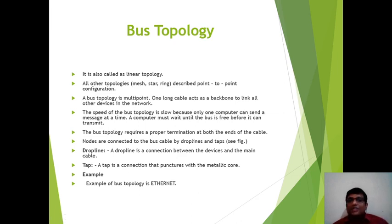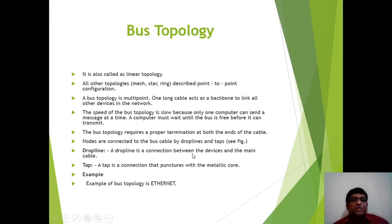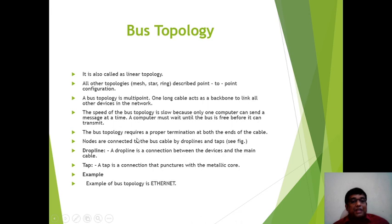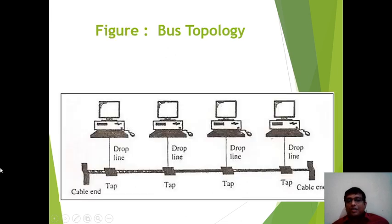Mesh topology requires wires and ports. Star topology requires a central hub. Ring topology requires a circular ring. But bus topology requires drop lines and taps. A drop line is the connection between the device and the main cable. A tap is a connector that punctures into the metallic core. An example of bus topology is Ethernet. In the diagram, four terminals are connected to the long cable with the help of drop lines and taps.